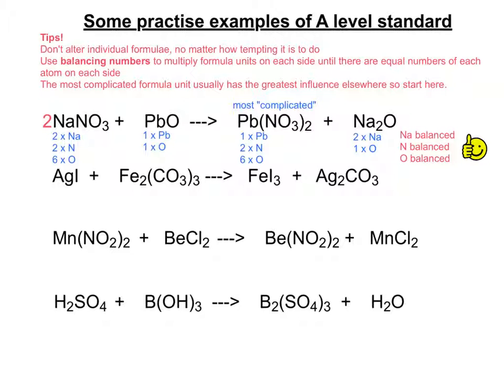So now we can do a quick check to see if there's the same number of each atom on each side. By doing a quick count of everything on both sides you can see that the sodiums have been balanced, the nitrogens have been balanced, the oxygens have been balanced, and in addition the lead has been balanced.